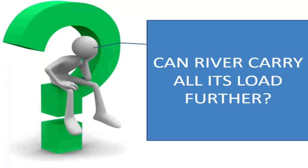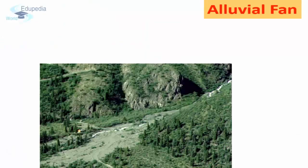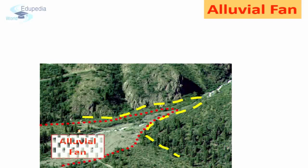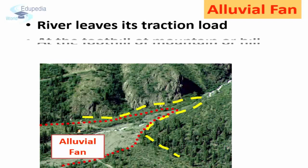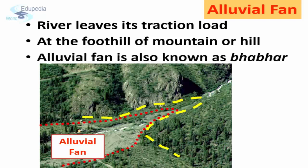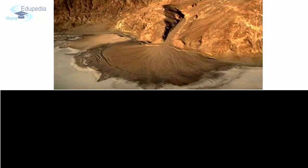Can the river carry all its load further? Since the gradient is now gentle, the velocity of the river decreases, hence the power of carrying material as well. As soon as the river enters its middle course, its velocity is checked, because of which it drops its entire load — mainly traction load — at the foothill, due to which a heap of traction load is developed. This heap develops into what we know as an alluvial fan: a fan-shaped landform created at the foothill of a mountain or hill. The river divides into a number of channels temporarily or may seep into the porous alluvial fan, known as bhabar.